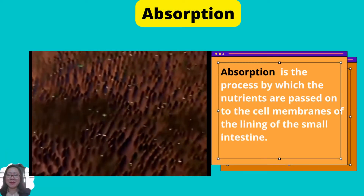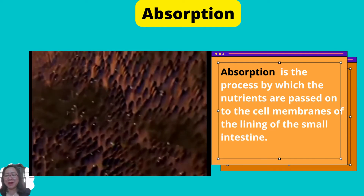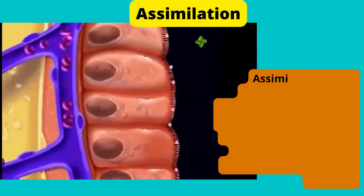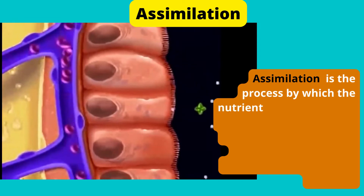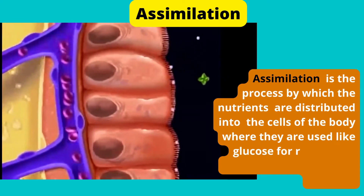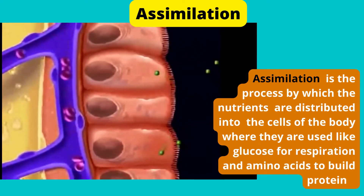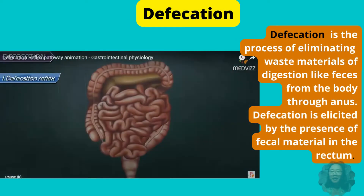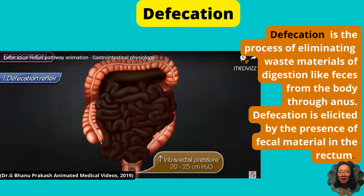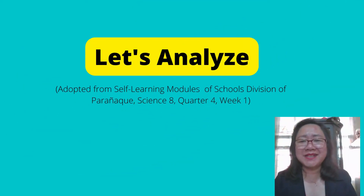In addition is absorption — the process by which the nutrients are passed on to the cell membranes of the lining of the small intestine. Another is assimilation — the process by which nutrients are distributed into the cells of the body, used like glucose for respiration and amino acids to build proteins. Another process is defecation — the process of eliminating waste materials of digestion like feces from the body through the anus, elicited by the presence of fecal material in the rectum.